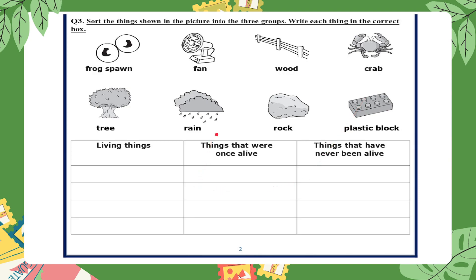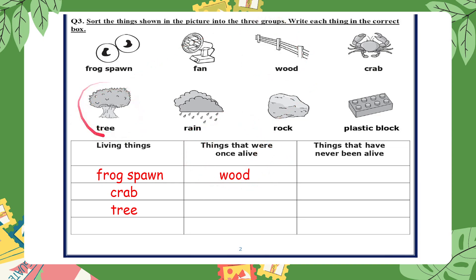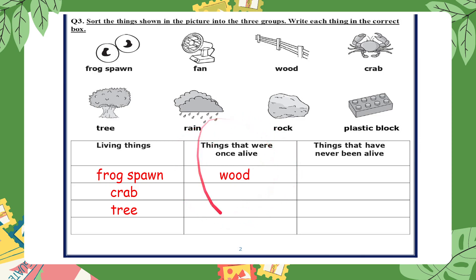Frog spawn, crab, and tree are all living things because they can do all seven rules. Wood goes in the group of things that were once alive, because wood comes from a tree which is a living thing. Wood was cut or removed from a living thing, so it was once part of a living thing — it cannot do the seven rules anymore.